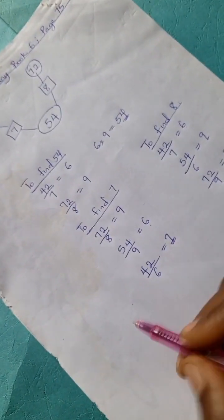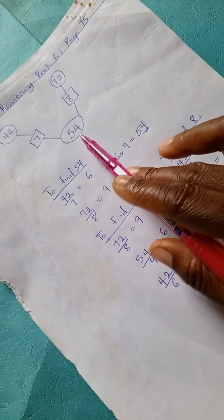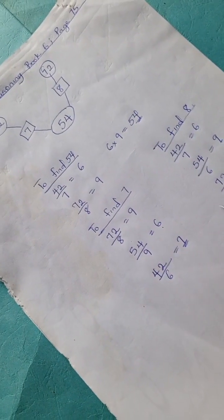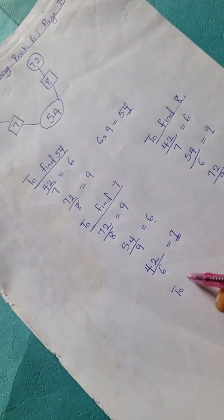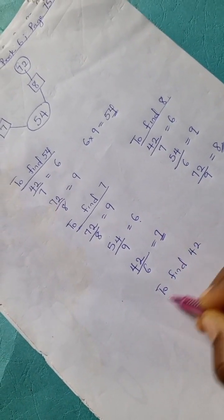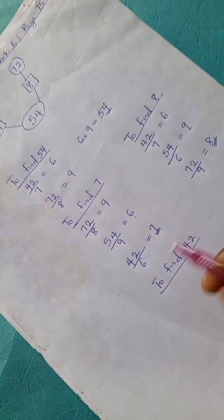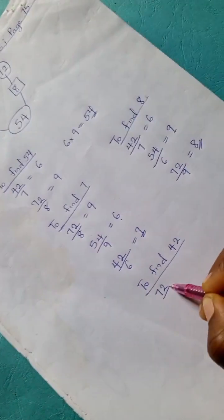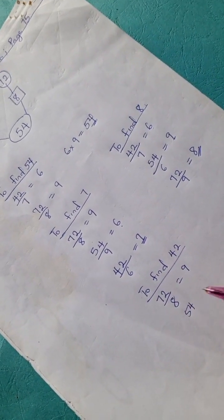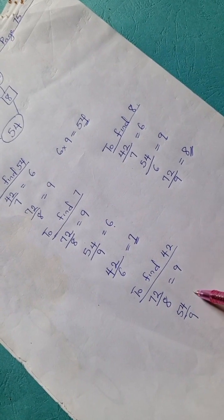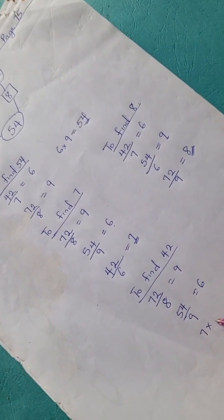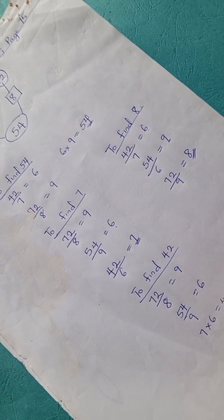So we're going to have 8. We're going to have 42 divided by 9 is 6, and 7 times 6 is 42.